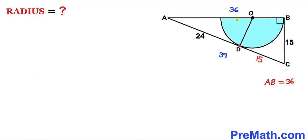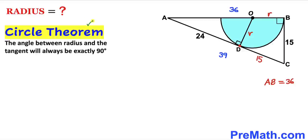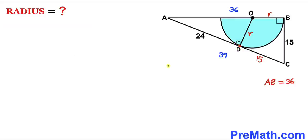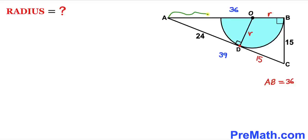Next, I've connected center O to the point of tangency D. OD is our radius r, and OB is also radius r. By the circle theorem, the angle between the radius and the tangent is always 90 degrees, so angle ADO is 90 degrees. Since the whole side AB is 36 and radius OB is r, segment AO equals 36 minus r.